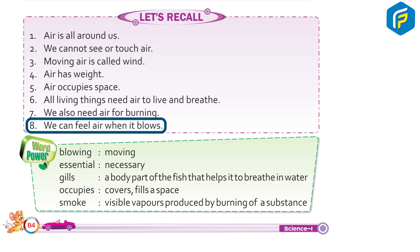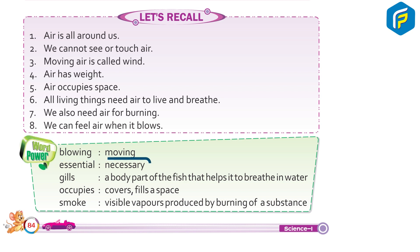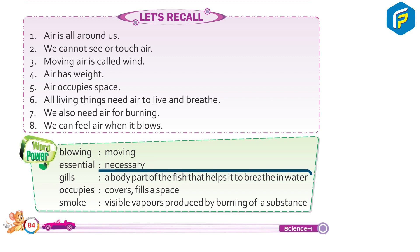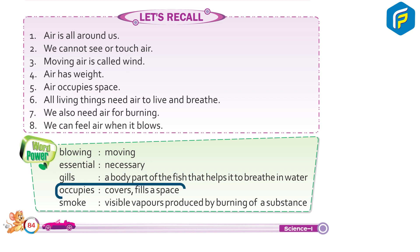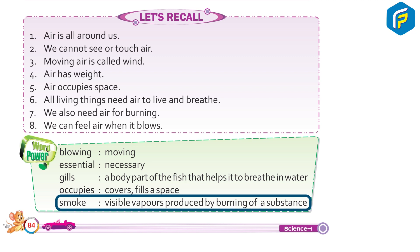8. We can feel air when it blows. Word power: Blowing — moving. Essential — necessary. Gills — a body part of the fish that helps it to breathe in water. Occupies — covers or fills the space. Smoke — visible vapors produced by burning of a substance.